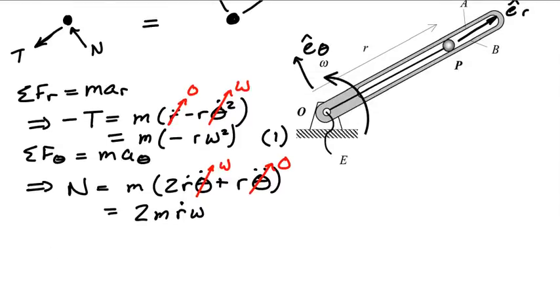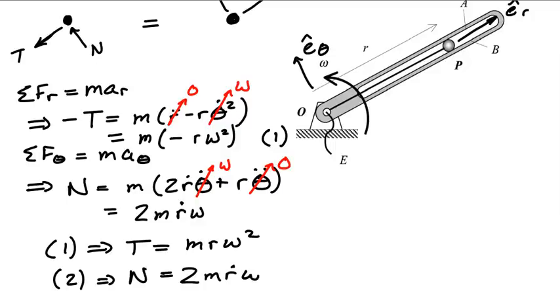Now, obviously, if we solve equation 1, we'll have an answer for the tension in the rope. Namely, it's going to be equal to M R omega squared. And if I solve equation 2, I'll have an answer for the normal force, which will simply be 2M R dot omega.